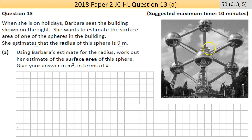Now the estimate word must be important. So what do we have here? One, two, three, four, five, six, seven, eight, nine - just nine spheres in total, although it does say she's only looking for one of them. Part (a) says using Barbara's estimate of the radius, so 9. Okay, so I'm going to write down r = 9, that might get me an attempt just for that. Work out her estimate of the surface area of this sphere. Give your answer in meters squared in terms of π.